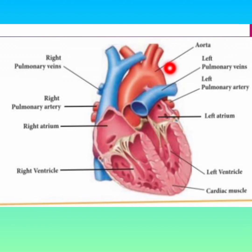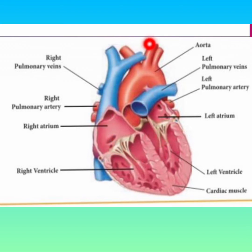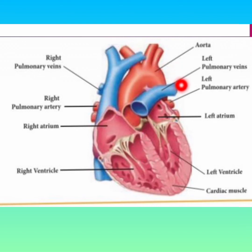The lungs oxygenate the blood, making it pure blood. The left side of the heart then pumps this oxygenated blood to all parts of the body. Red color represents deoxygenated blood, blue color represents oxygenated blood. The right side of the heart receives deoxygenated blood and passes it to the lungs; the lungs oxygenate it, then the left side pumps it all over the body. This is the function of the heart.